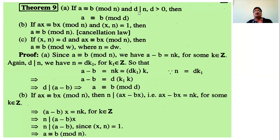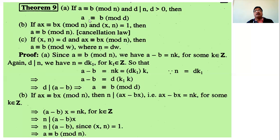We are also given that d divides n and d is greater than 0. Therefore n is equal to d into some integer k1, where k1 is an integer. By using the definition of divisibility, n is equal to d times k1. We have to show a is congruent to b modulo d, meaning a minus b is expressed in the form d into some integer.